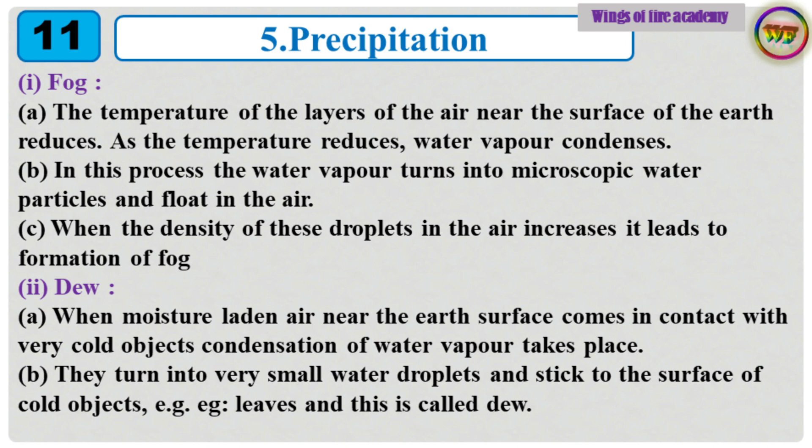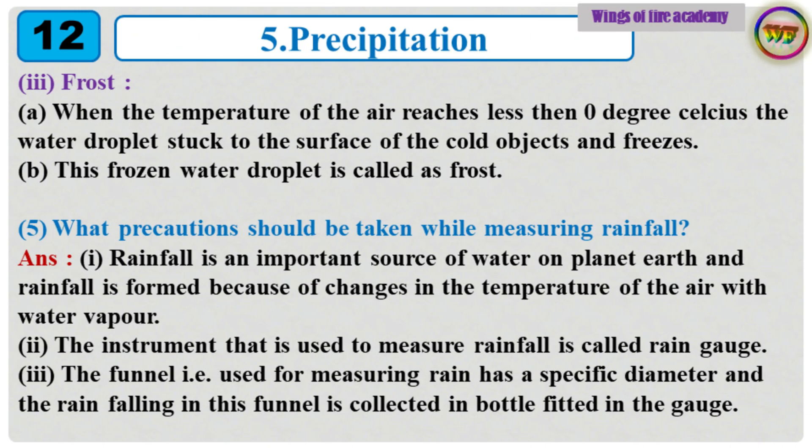2. Dew: A. When moisture-laden air near the earth's surface comes in contact with very cold objects, condensation of water vapor takes place. B. They turn into very small water droplets and stick to the surface of cold objects, for example leaves. This is called dew. 3. Frost: A. When the temperature of the air reaches less than 0 degrees Celsius, water droplets stuck to the surface of cold objects freeze. B. This frozen water droplet is called frost.